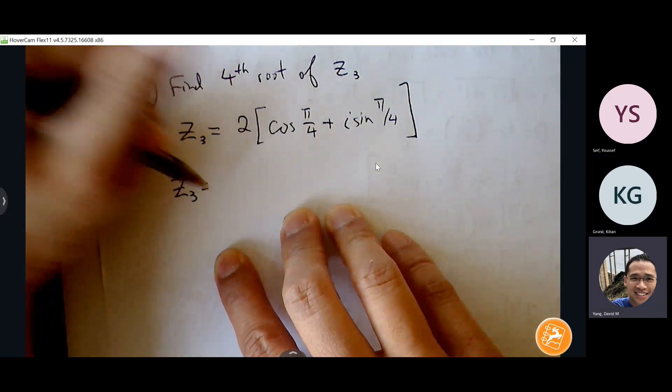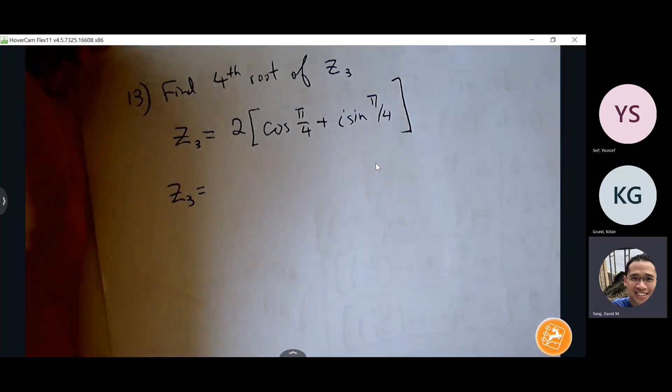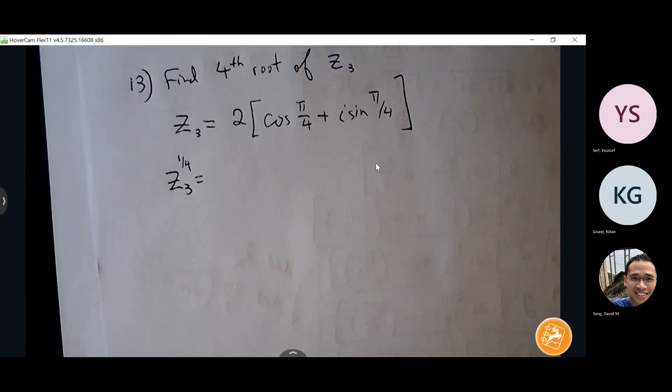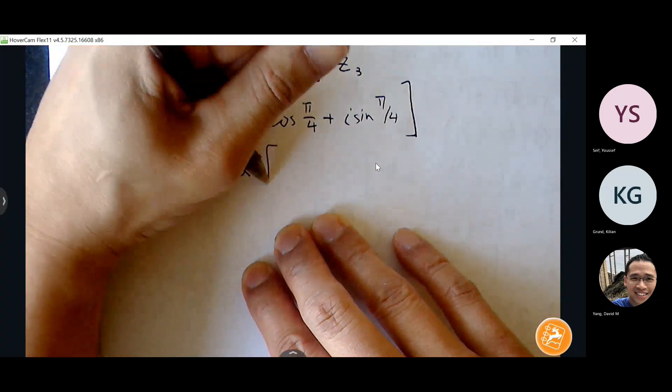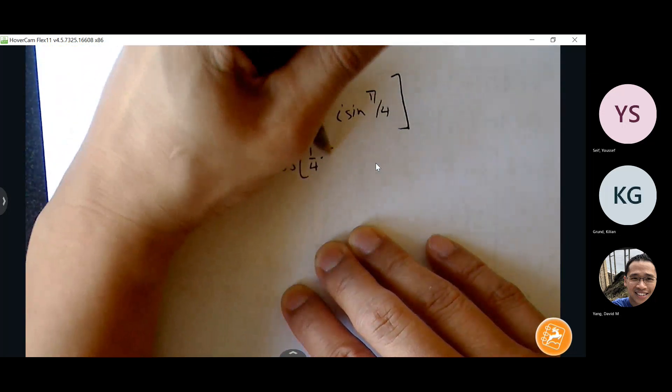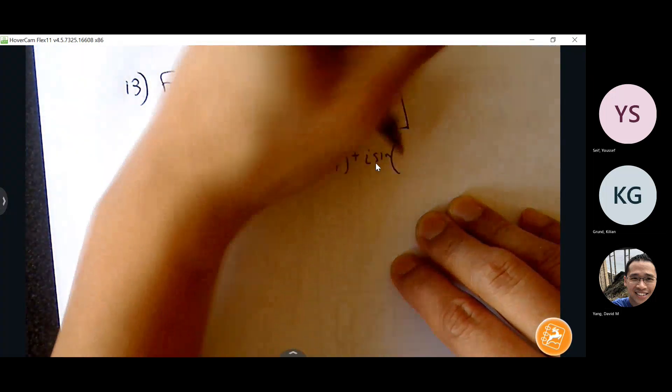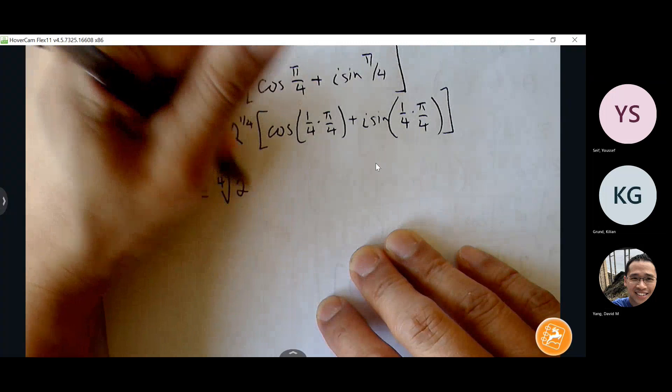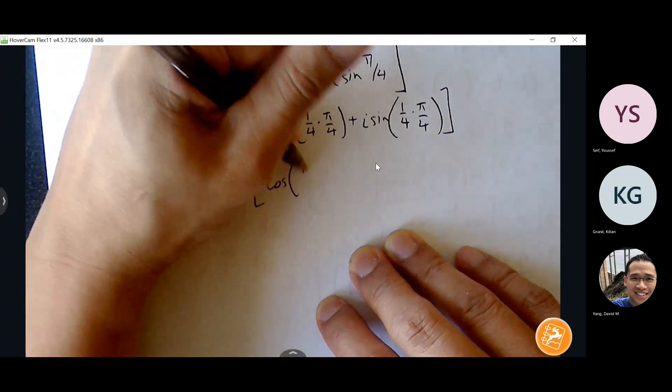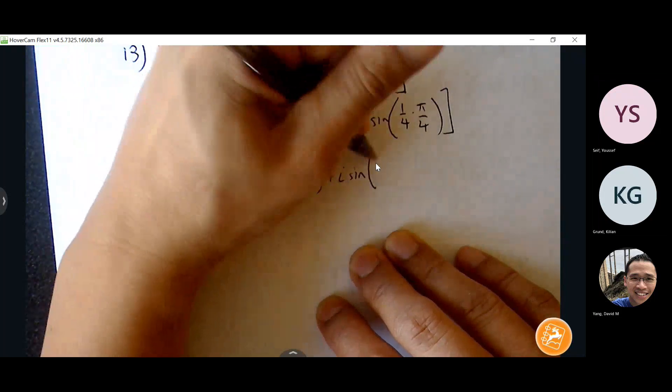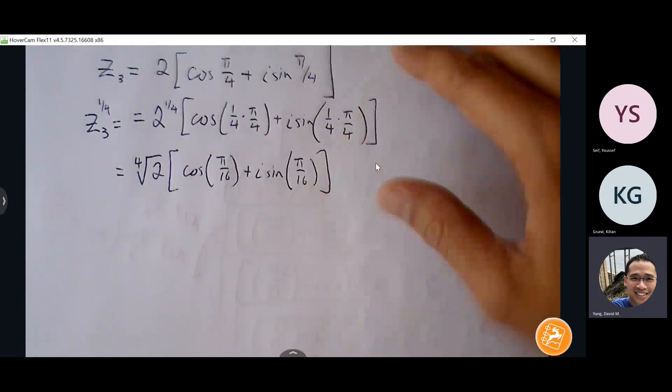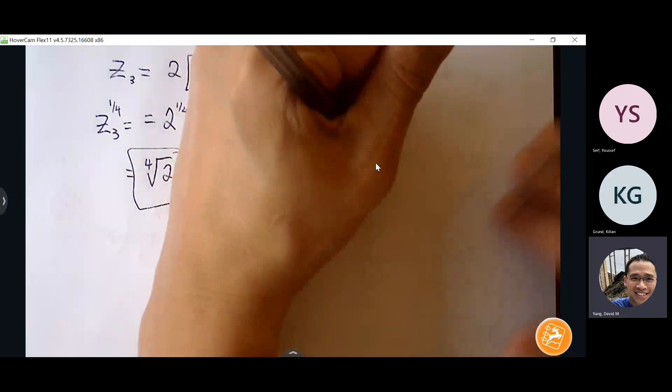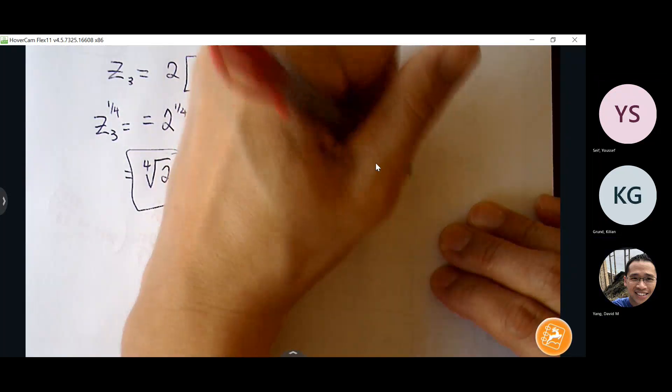Right, right, four solutions. And we're saving some steps because the R and theta is already given to you. Alright, so there is my first solution. I know I'm looking for three more because it says fourth root, so I want four solutions in total. So my pattern is I'm going to add 2 pi over n. In this case, my n is 4.